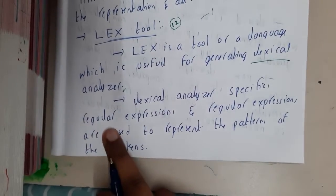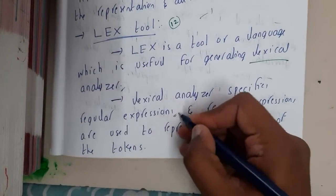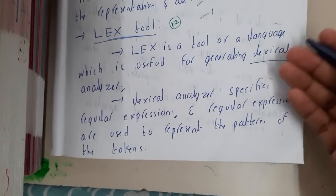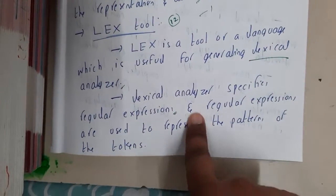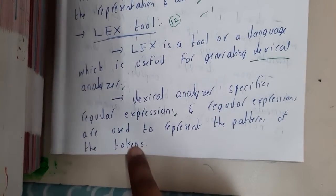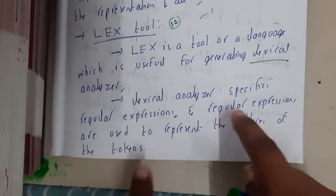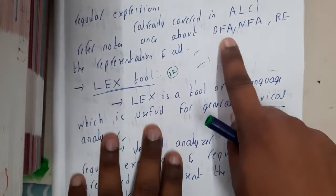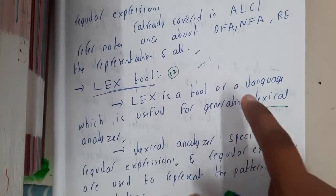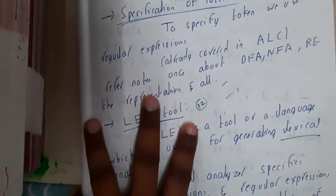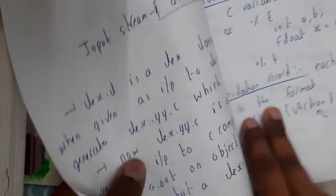The lexical analyzer specifies regular expressions — this is the reason why I told you to recall or revise the regular expressions. Regular expressions are used to represent the patterns of the tokens. Patterns of the tokens can be represented with the help of DFA, and that is the reason why the whole lexical analysis process can be achieved with the help of finite automata.